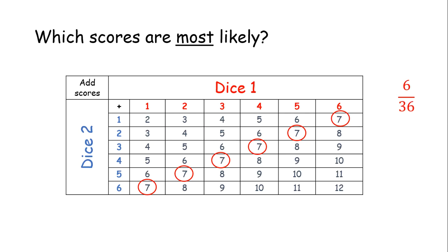So, we can say the probability of scoring a seven, which is also the highest, is six ways out of a total of 36, which can simplify down to a sixth. And similarly, we can ask the question about which score is least likely. So, just pause the video and see if you can work out which score or scores are least likely.